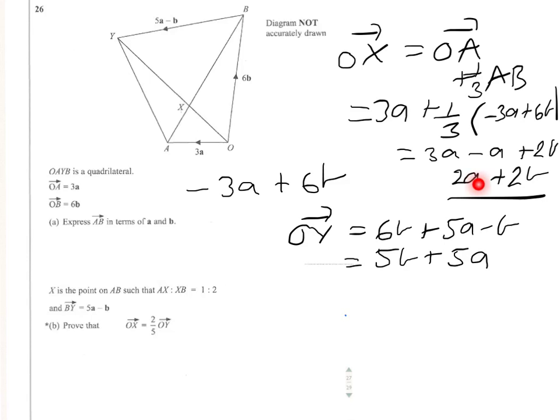So OX is 2a plus 2b. OY is 5b plus 5a. So we've proved it. So therefore, OX equals two-fifths of OY. And that's the problem done.